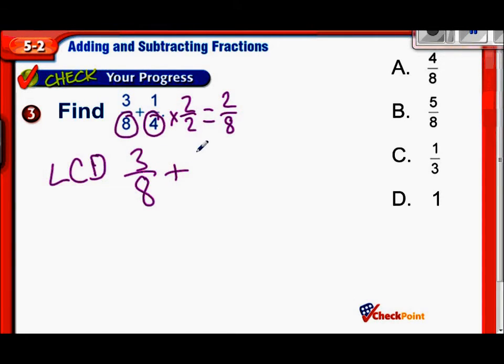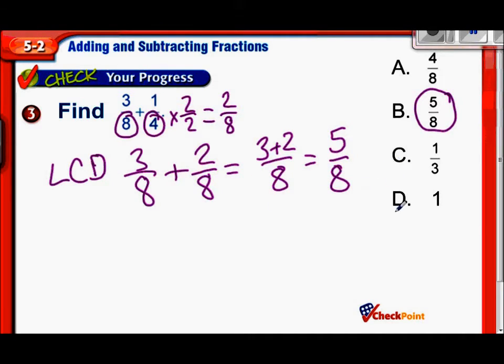So back to the main problem, we're doing three-eighths plus, oops, plus two-eighths. Well, that would just be three plus two over eight, which is five over eight. The last thing you want to ask yourself is, can five-eighths be simplified? And the answer is no, five-eighths. Five and eight have no common factors, so it is already simplified.